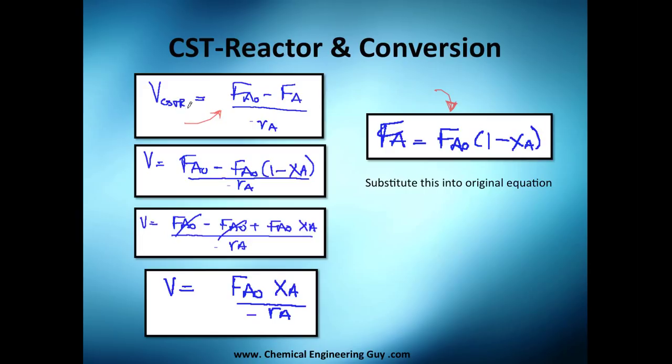The volume of the continuous stirred tank reactor equals FA0 minus FA divided by the rate of reaction. Now what will happen if we just literally plug this equation here? We will have FA initial minus FA initial that multiplies 1 minus XA.